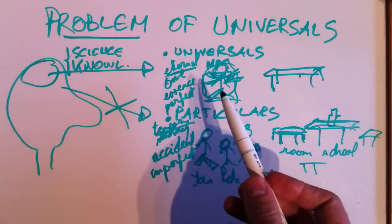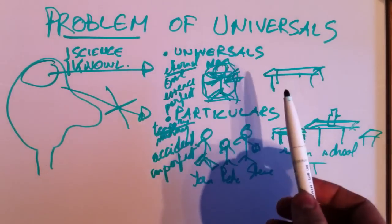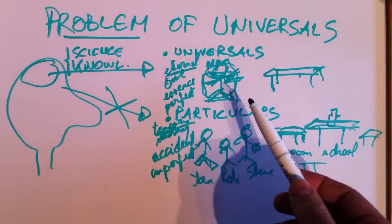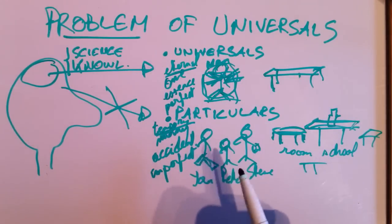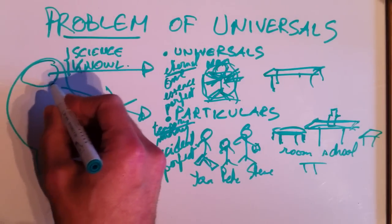Well, you can think about it. I mean, universals, like man or table, it's not obvious what it really is. Particulars, that's pretty obvious. Why? Because we see. We see particulars.